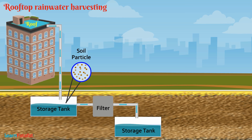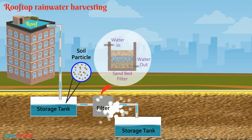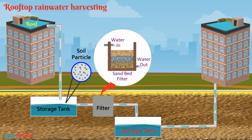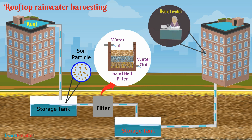Often, the water contains soil particles and other impurities. In such cases, water should be filtered to remove these impurities. Water stored in the storage tank can then be used to fulfill our water needs.